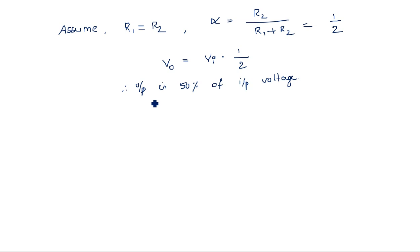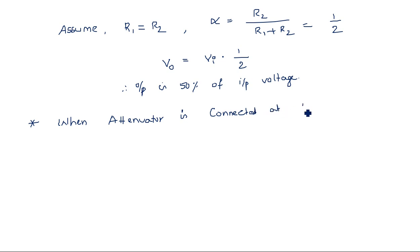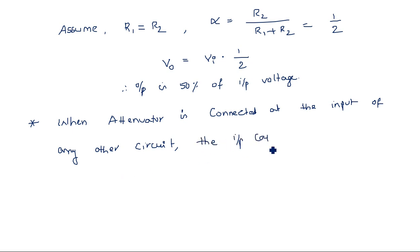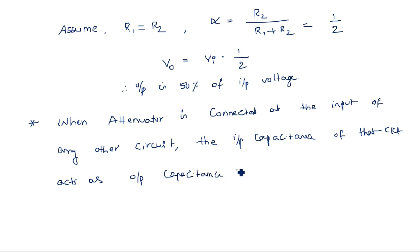This is the basic and standard attenuator circuit. Now when this circuit is connected at the input of other circuits — suppose when the attenuator is connected at the input of any other circuit — what happens is that the input capacitance of that circuit acts as the output capacitance for the attenuator.